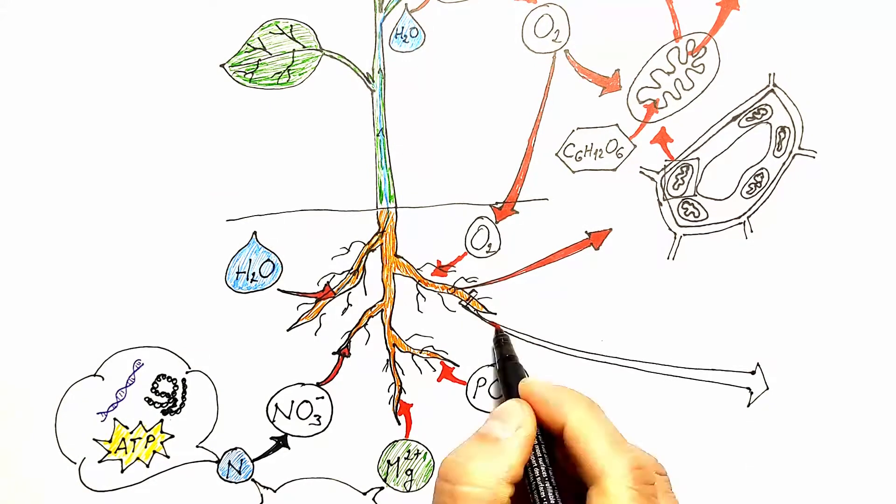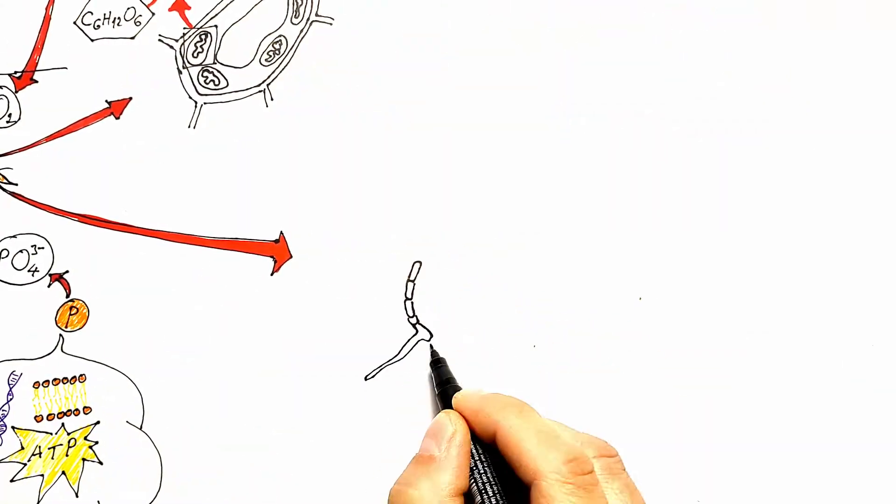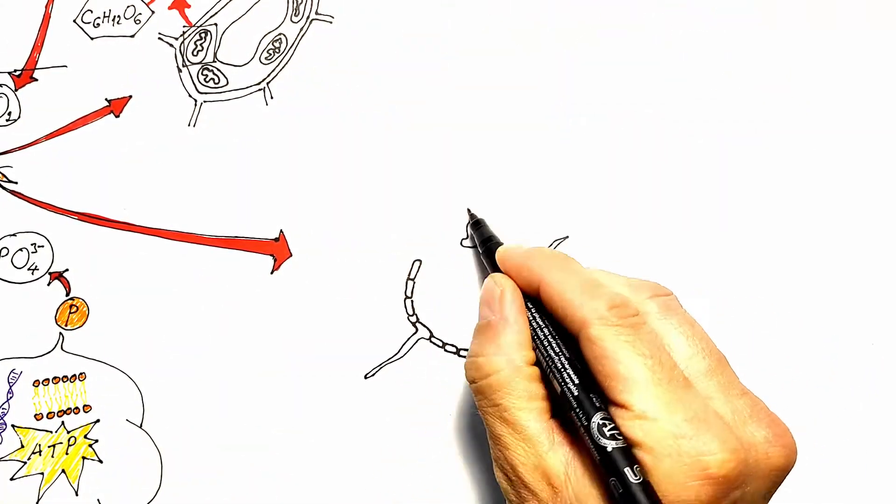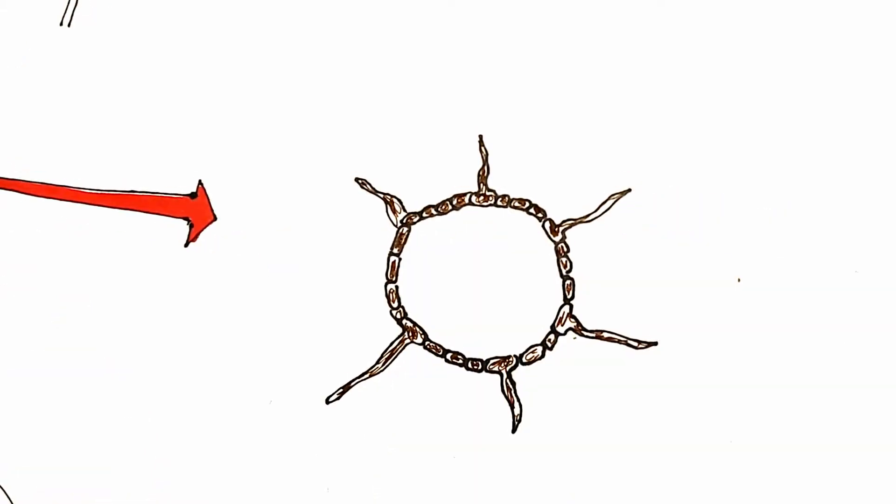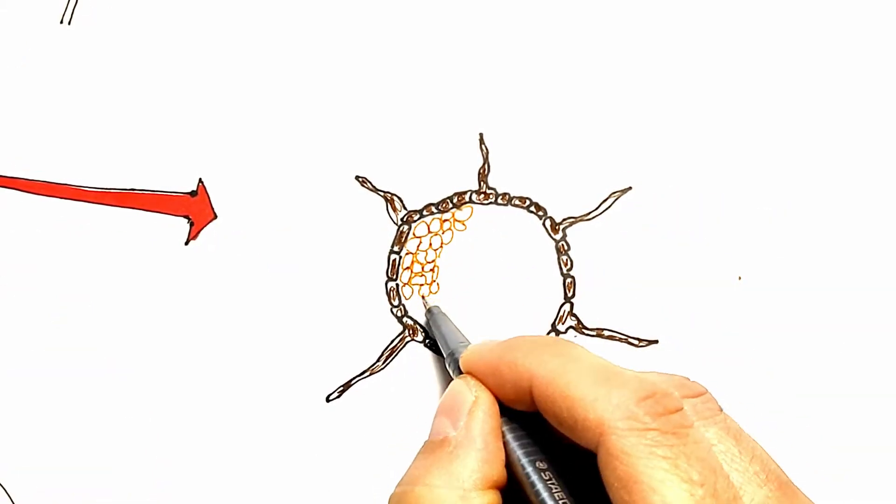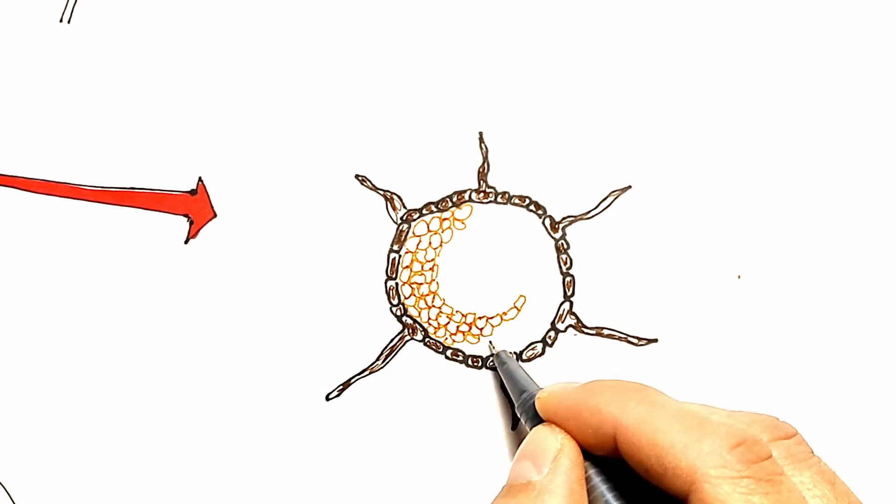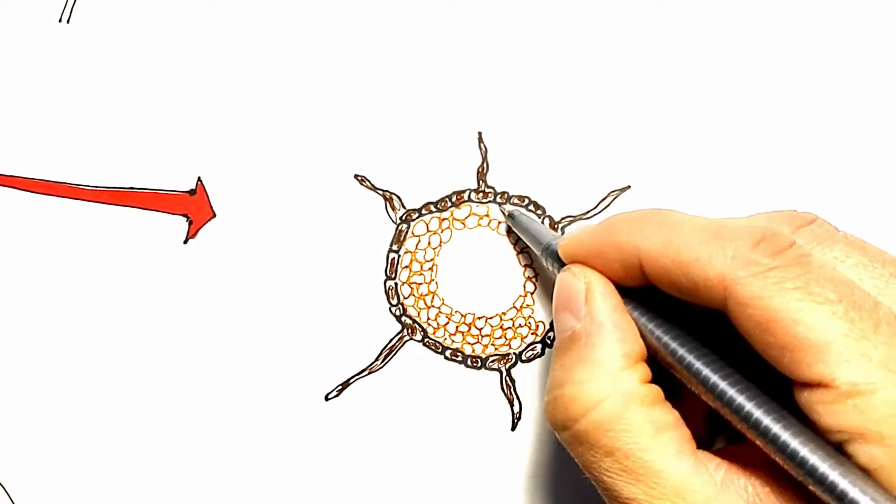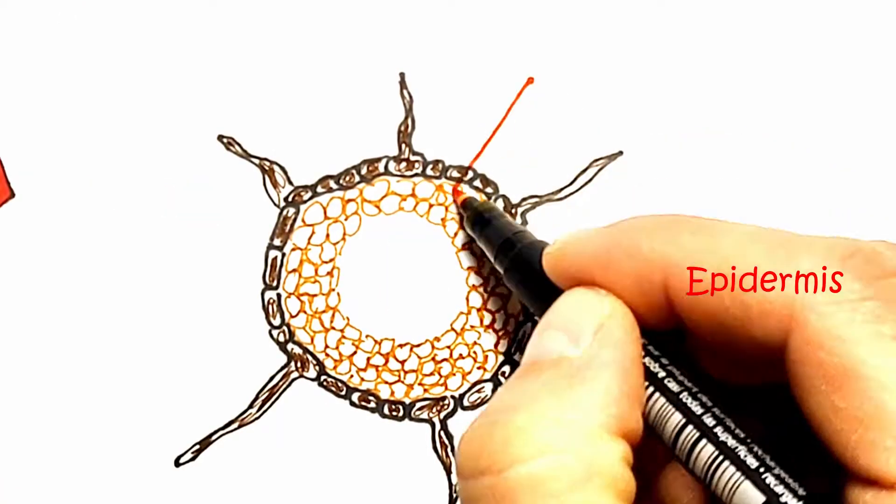The root of the plant is extremely branched, which significantly increases the surface area for absorption. If we make a cross-section of the root, we can see epidermal cells on the root surface, most of which have root hairs, structures that further increase the root area.